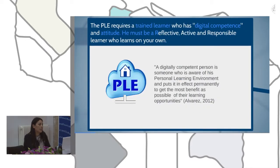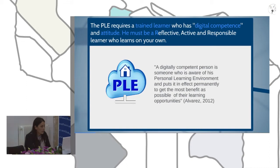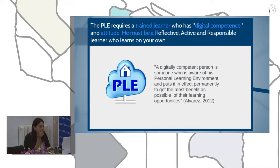The PLE requires a trained learner who has digital competence and the right attitude. The learner must be reflective, active, and responsible — someone who learns on their own. A digitally competent person is somebody who is aware of the personal learning environment and works to get the most benefits from learning opportunities.